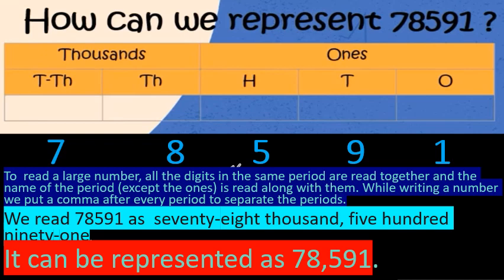Let us see how to put the value into the place value chart. Whenever we put a value into the place value chart, we always start from the ones place and go further up to the ten thousands place. When we read it, we read from left to right, that is, from the ten thousands place to the ones place.